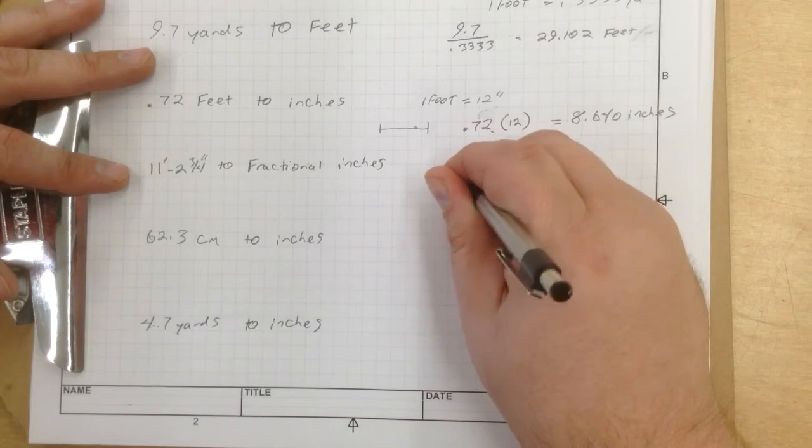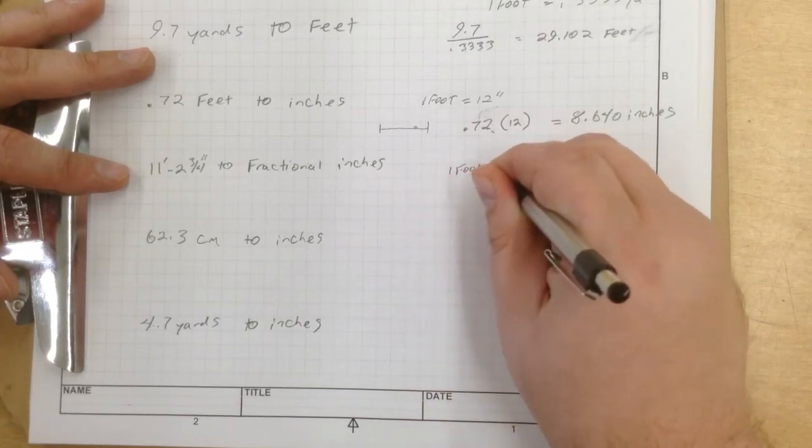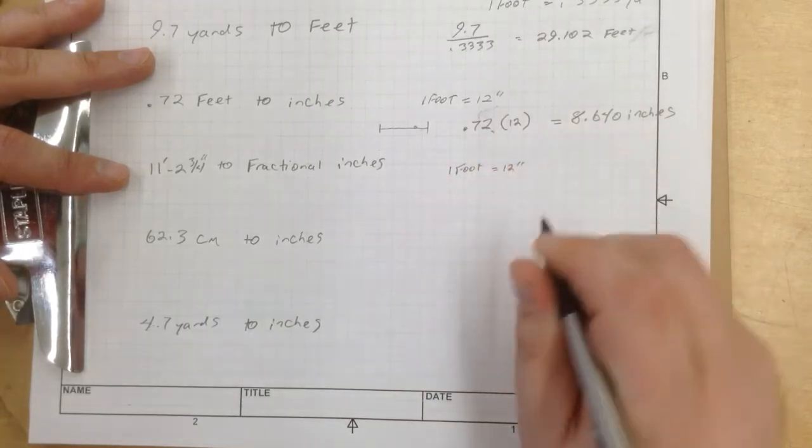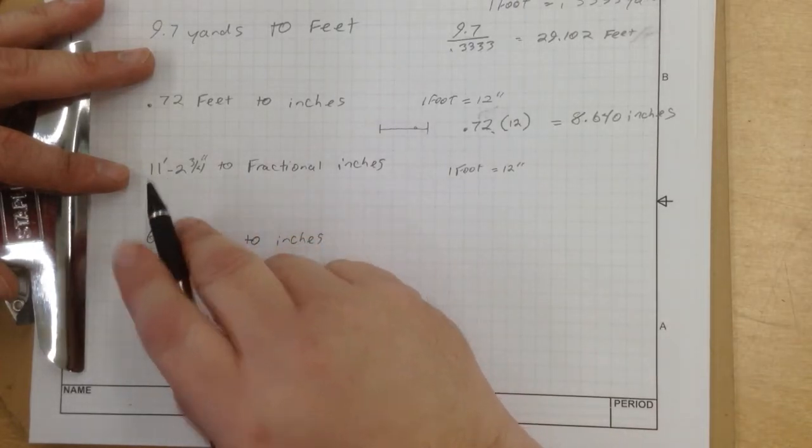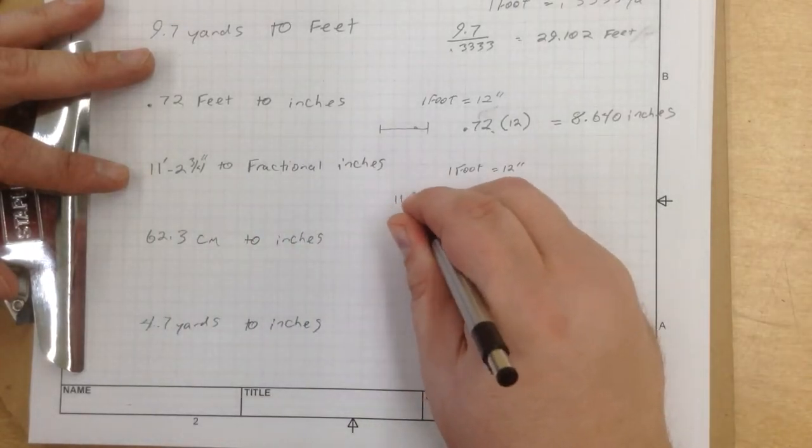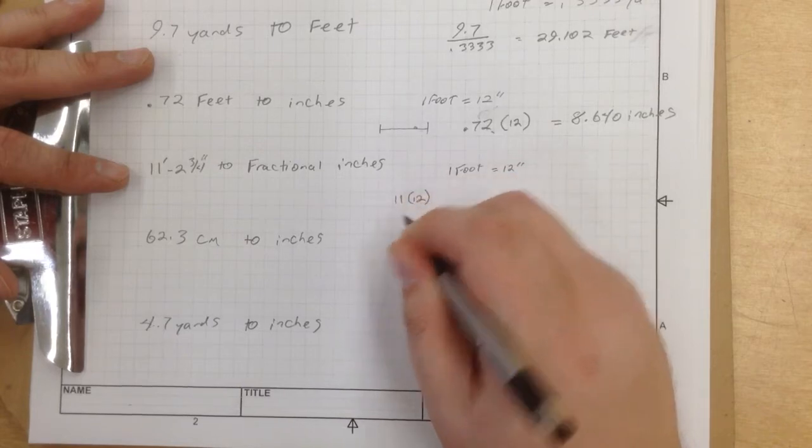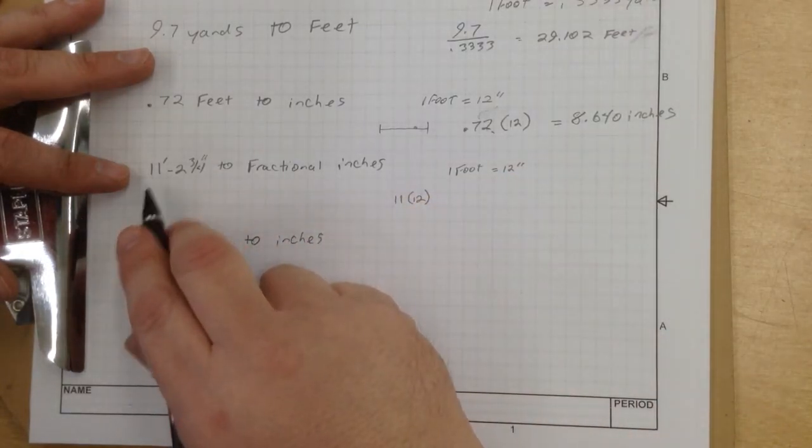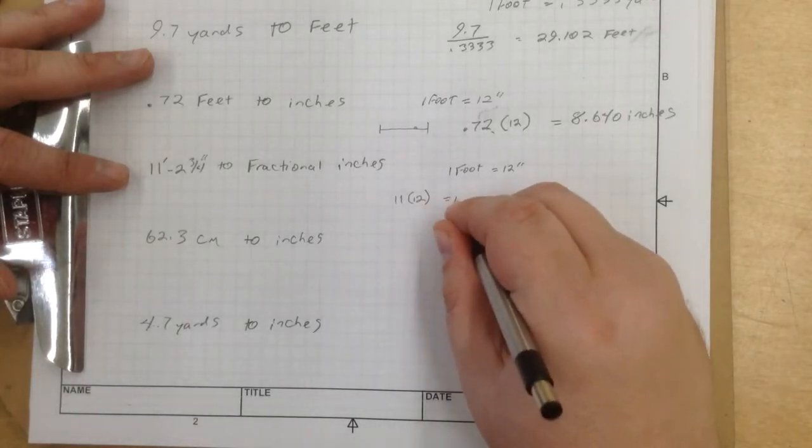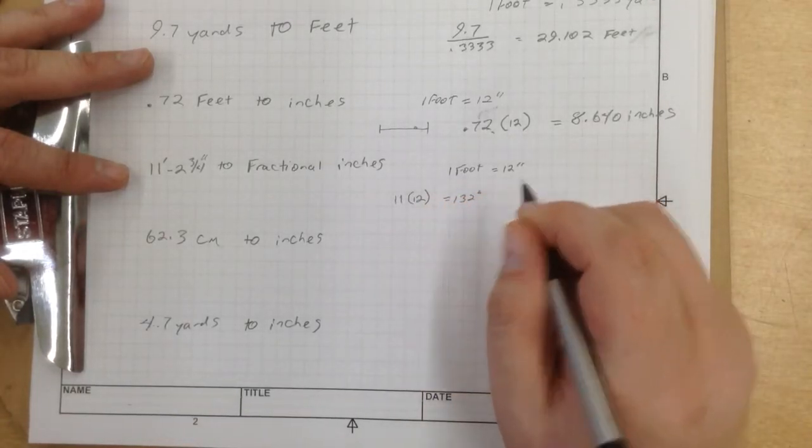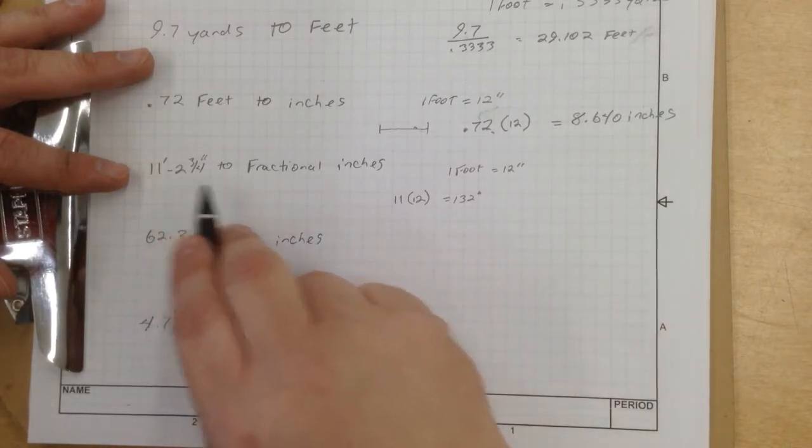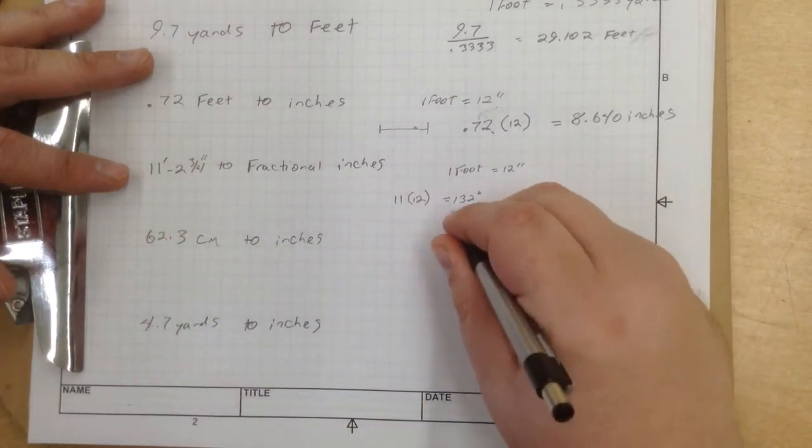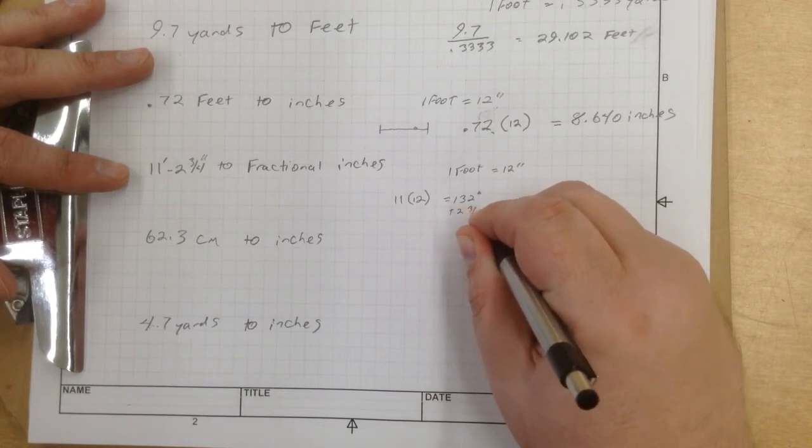Remember that one foot equals 12 inches. So the easiest thing to do is start off with the feet. 11 feet times 12 inches, and that's going to give us how many inches are in 11 feet. And 11 times 12 equals 132 inches. Okay, got that. And then we have 2 3 quarter, so 132 plus 2 3 quarter.